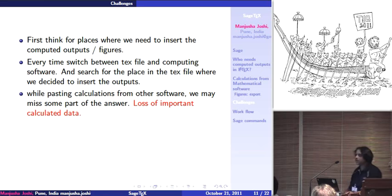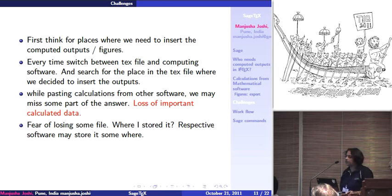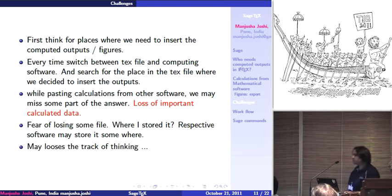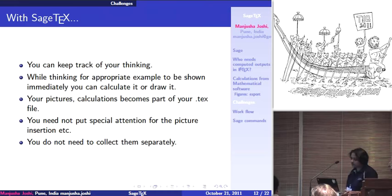Not only that, as I showed — the factorial of 100 generates huge output — and if one is trying to cut and paste, sometimes they may miss a digit, and this is dangerous. It is a type of loss of important calculated data. Apart from that, there is always the fear of where is my file, where am I losing it, have I stored it or not — I have to keep track of all these things. And doing this circus, one may lose track of thinking, lose the thread of their research paper.